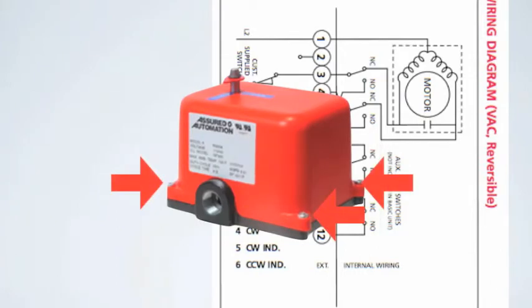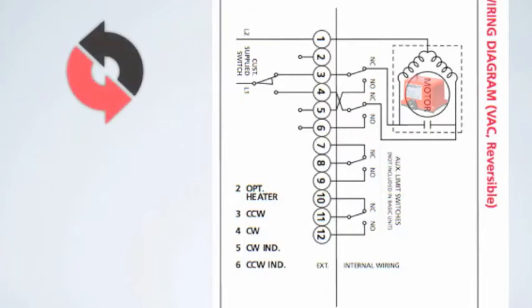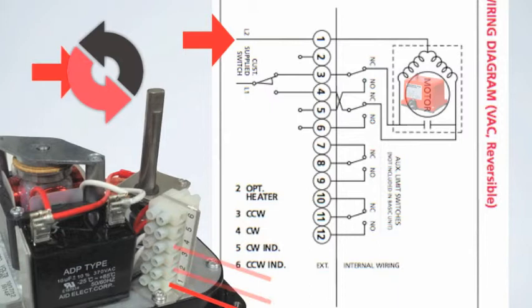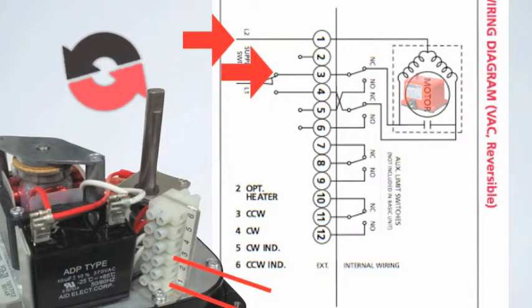To open or drive the actuator in a counterclockwise direction, apply power to Terminal 1 and Terminal 3. The actuator will turn counterclockwise until it reaches the internal limit switches and shuts off.